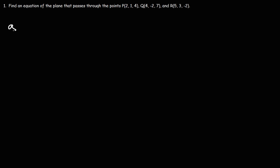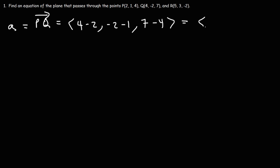Let's start with vector A, which is vector PQ. We're going to take point Q and subtract point P. So it's Q minus P: 4 minus 2 for the x-values, negative 2 minus 1 for the y-values, and 7 minus 4 for the z-values. That gives us 2, negative 3, 3. So that's vector A.